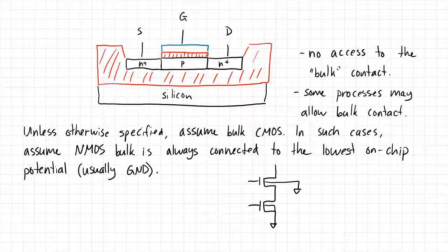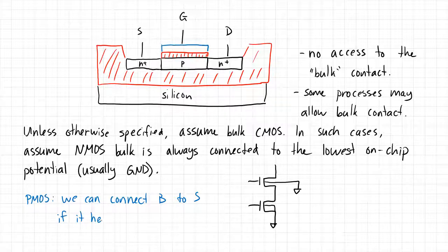One note: in PMOS, we can connect the bulk to the source if we want, if it helps. The reason we can do this is because the entire device is in its own N-well, which can be distinct from the N-well of an adjacent PMOS and distinct from the P-substrate. So we can choose to connect the bulk of a PMOS device to wherever we want — typically to the source if that helps in the design.